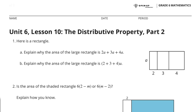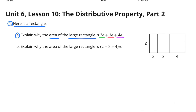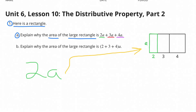Unit 6 Lesson 10, The Distributive Property Part 2. Number 1: Here is a rectangle. Part A: Explain why the area of the large rectangle is 2 times A plus 3 times A plus 4 times A.